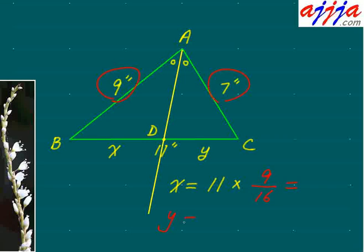Okay, how about y? Y equals 11 times 7 out of 16. 7 out of 16. They separate this length by this ratio. Very simple.